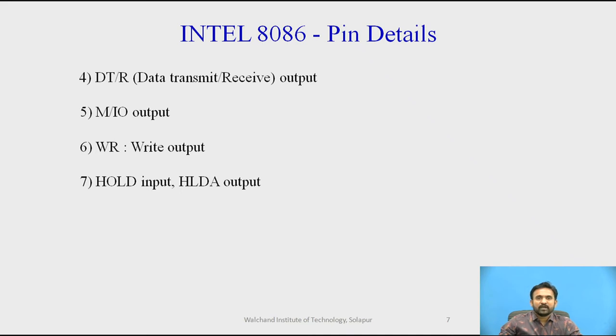The next pin, M/IO, is an output signal used to distinguish memory data transfer and I/O data transfer. When M/IO is high, there is memory data transfer. If M/IO is low, then it is an I/O data transfer. The sixth one, WR, is the write output. WR is low whenever the 8086 is writing data into memory or an I/O device.